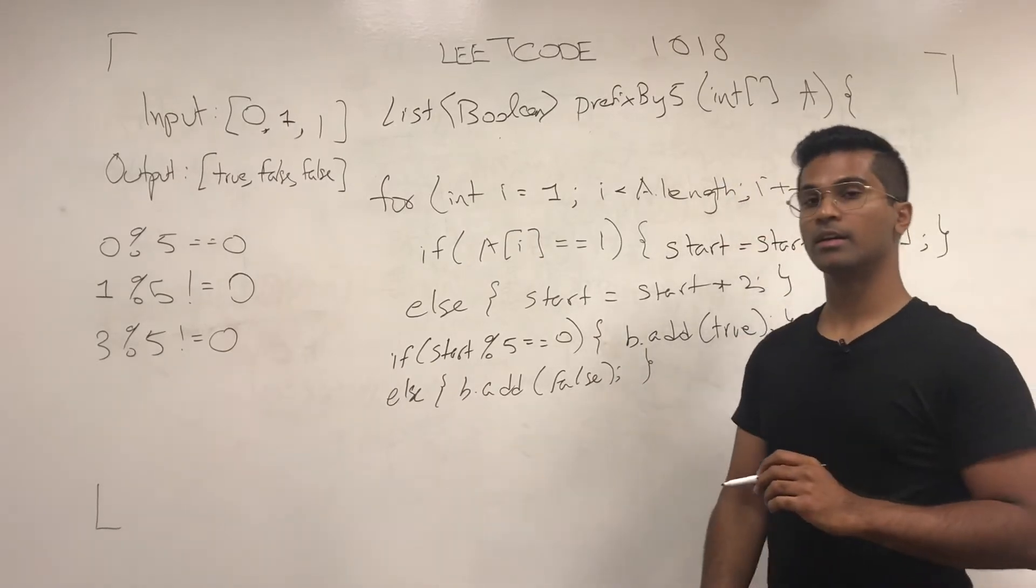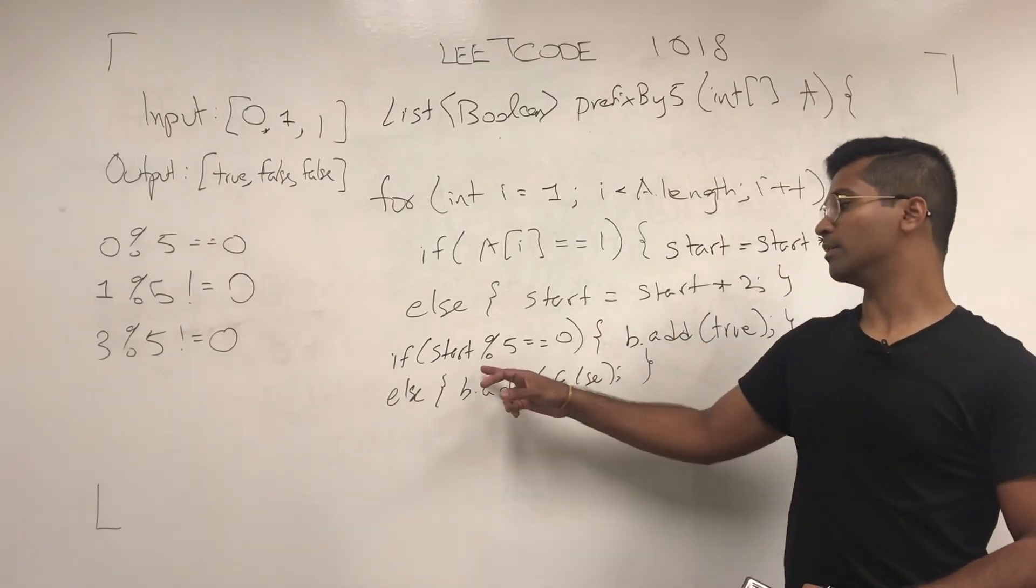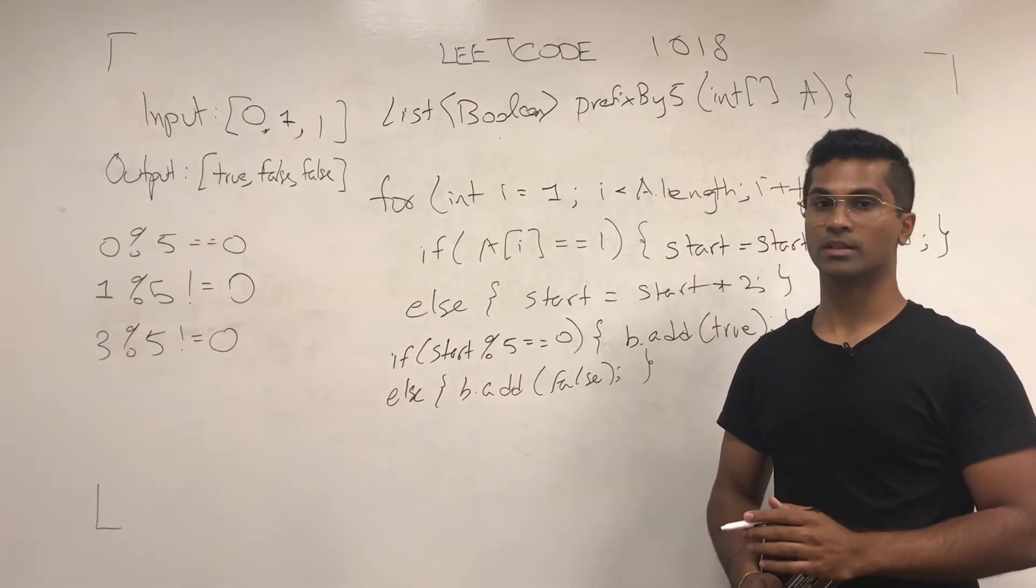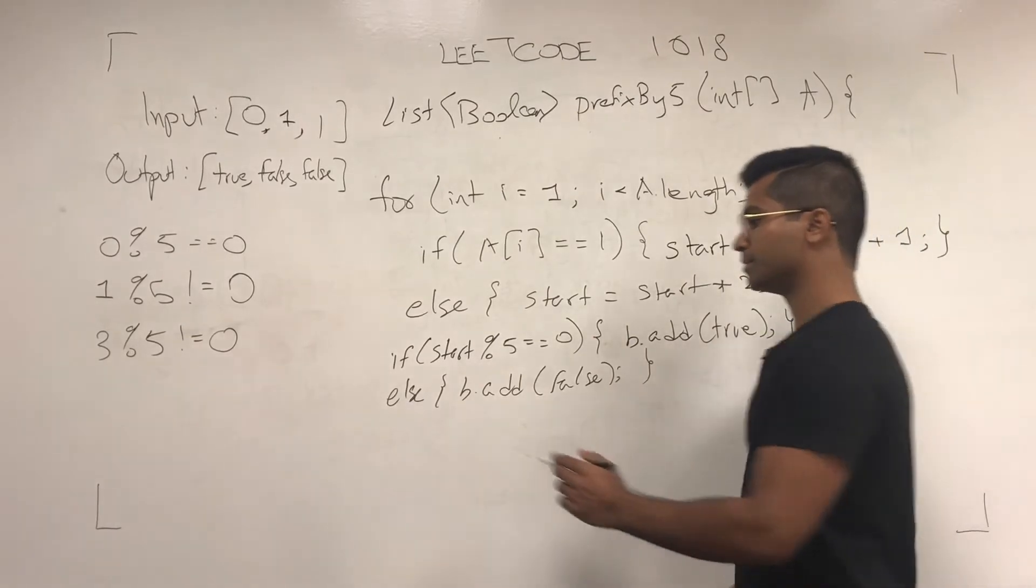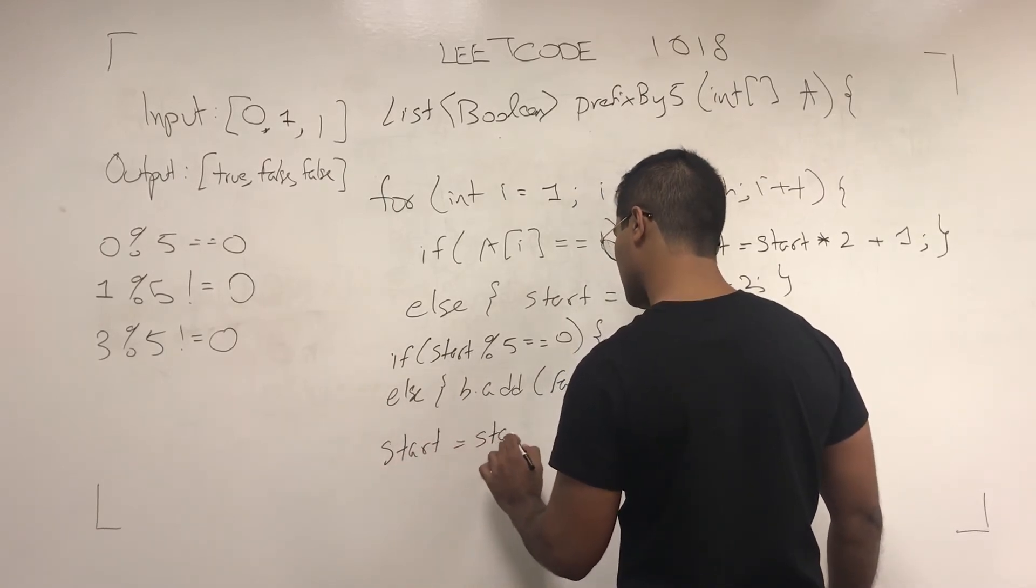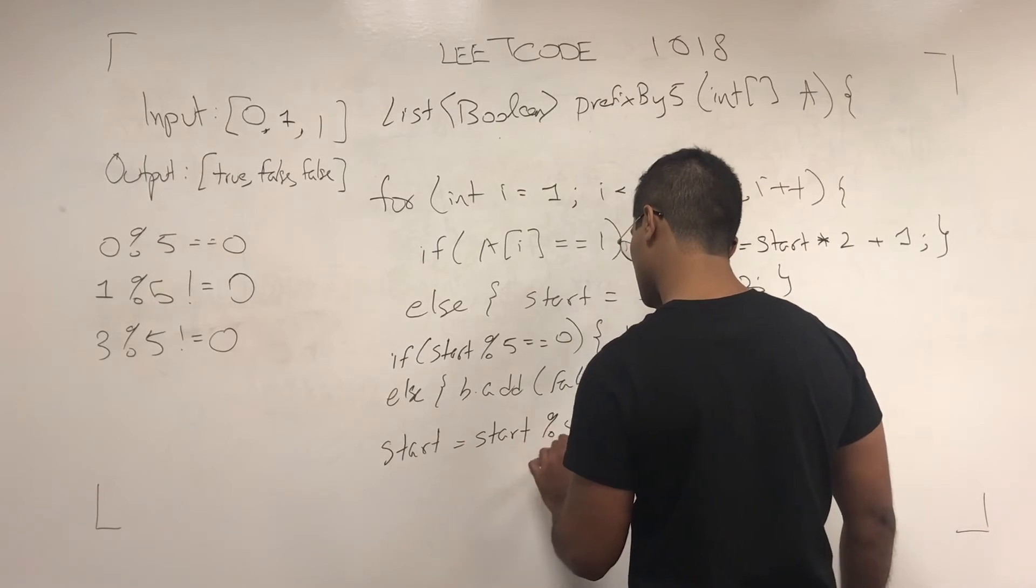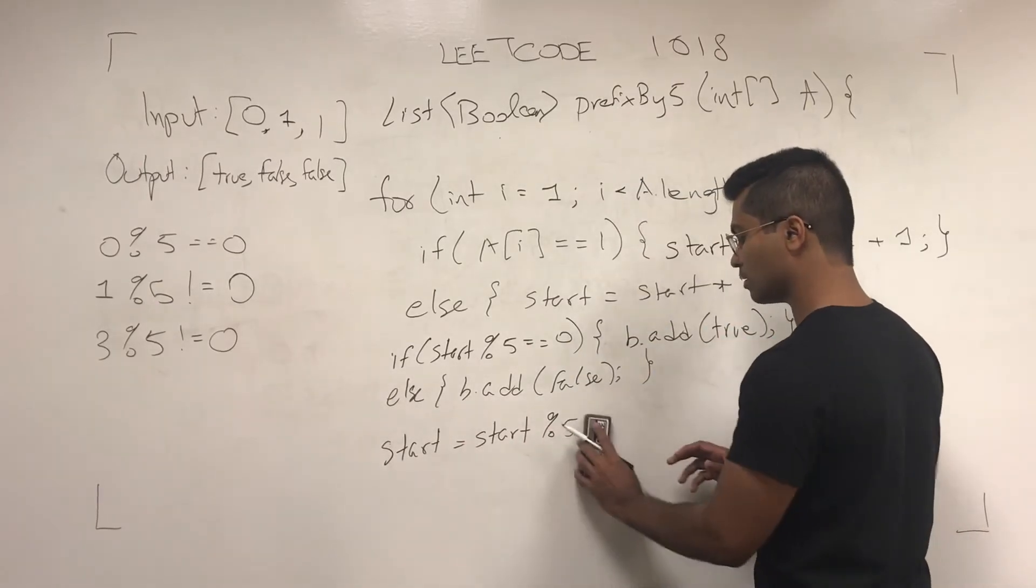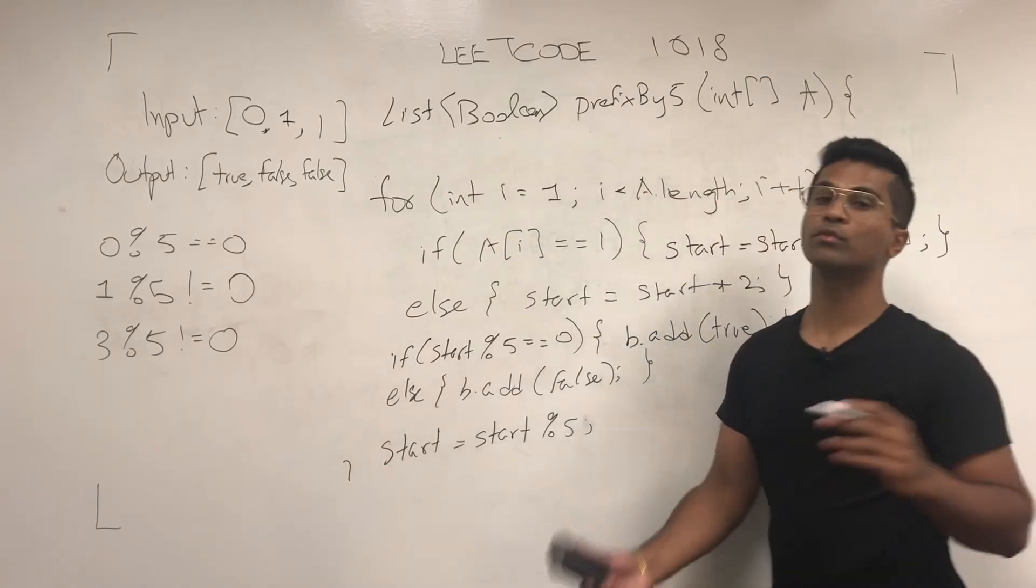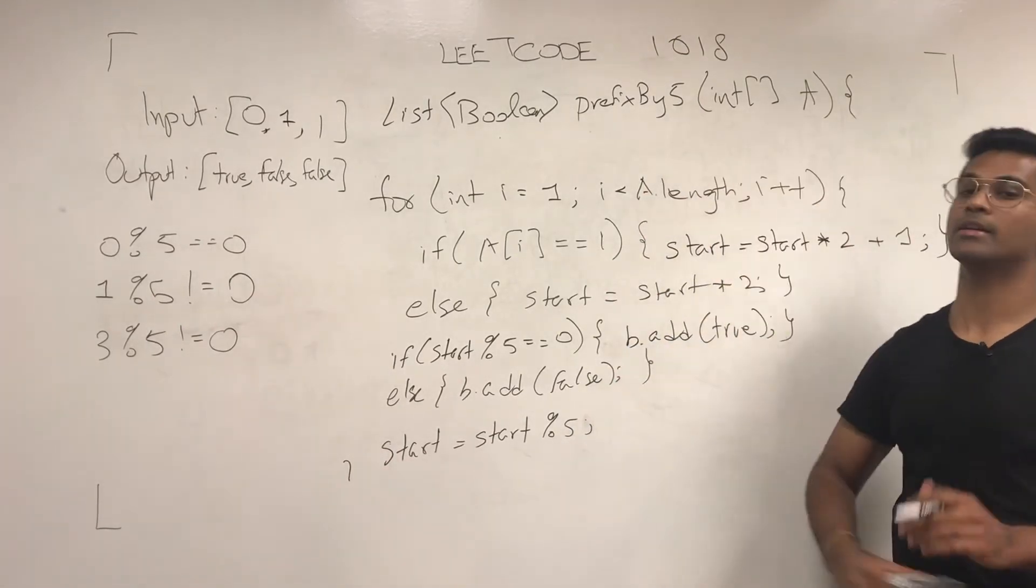Now the trick here is to mod this start by 5, because otherwise it's going to overflow. It's going to overflow mostly because input A is pretty large.